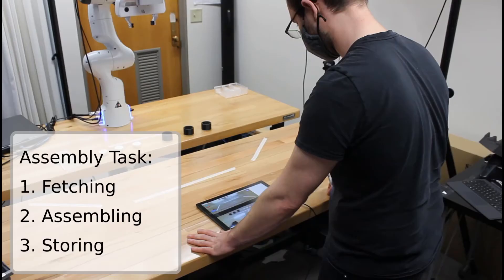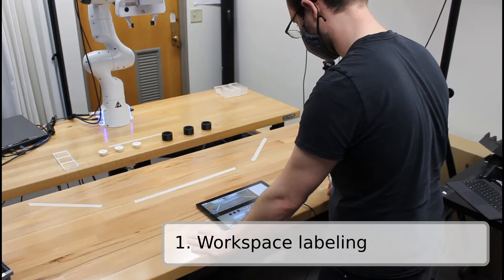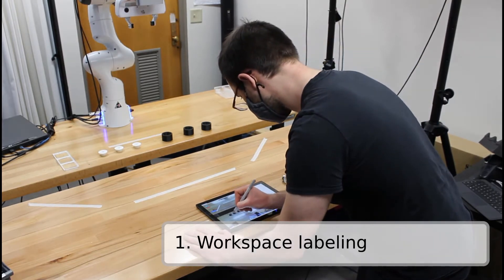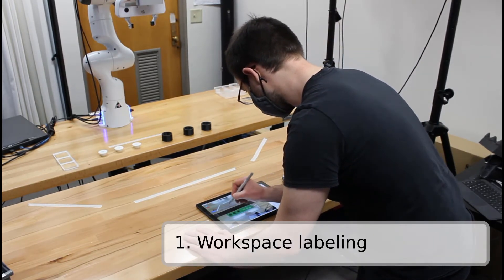As an example, we can use Situated live programming to program the task mentioned earlier. First, the user labels relevant regions of the environment. For example, the location of unassembled pieces and the human workspace.